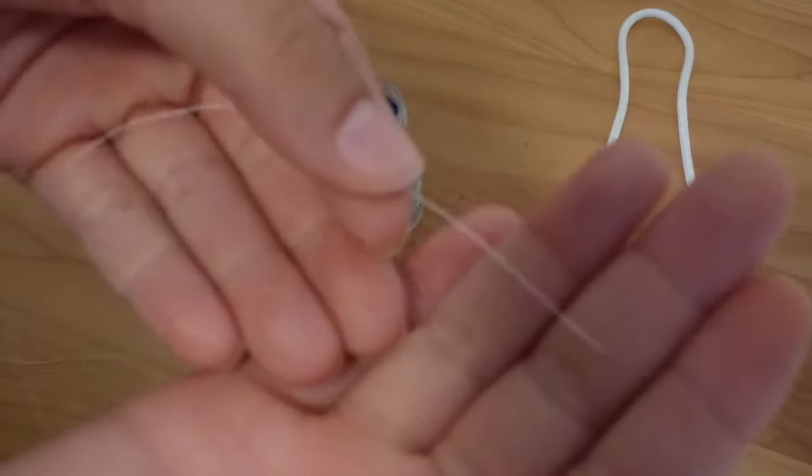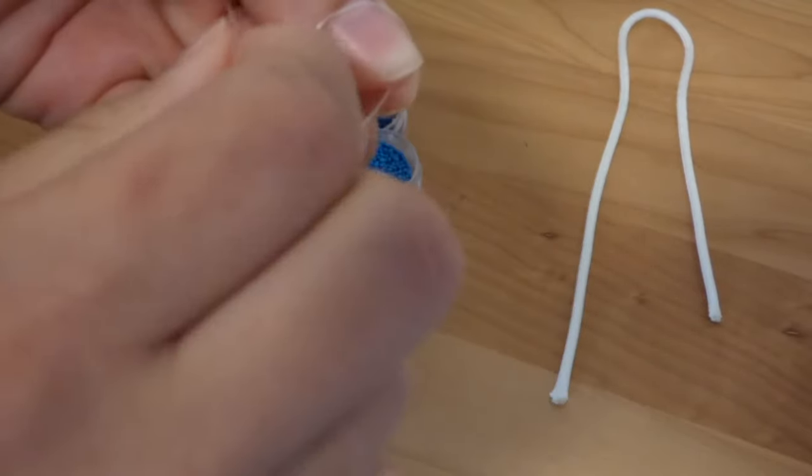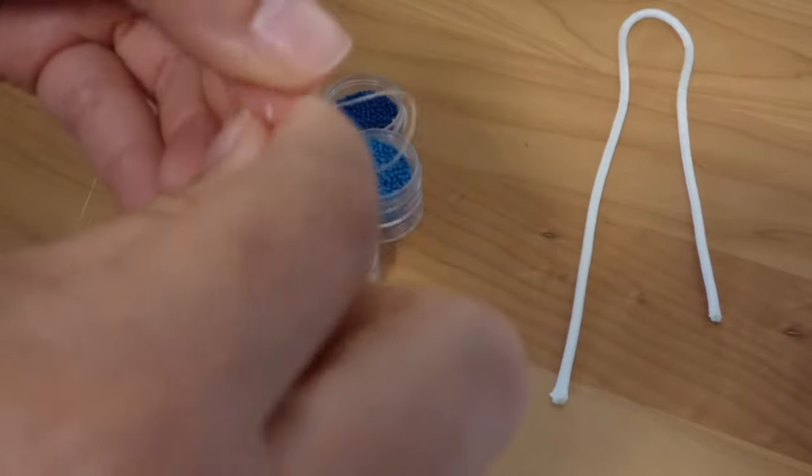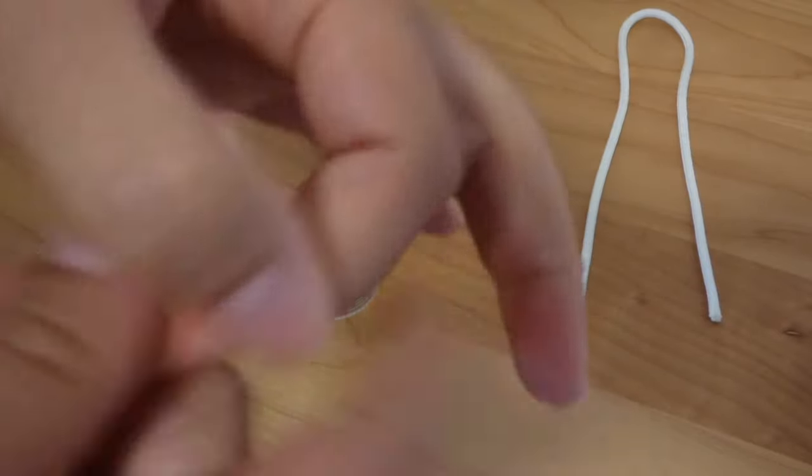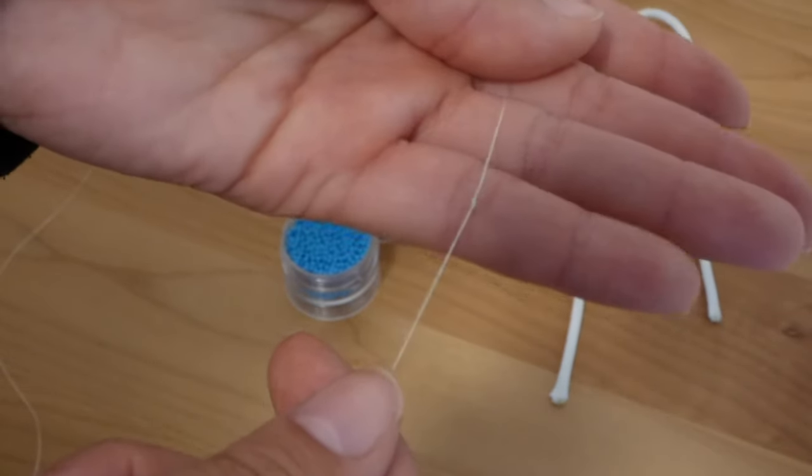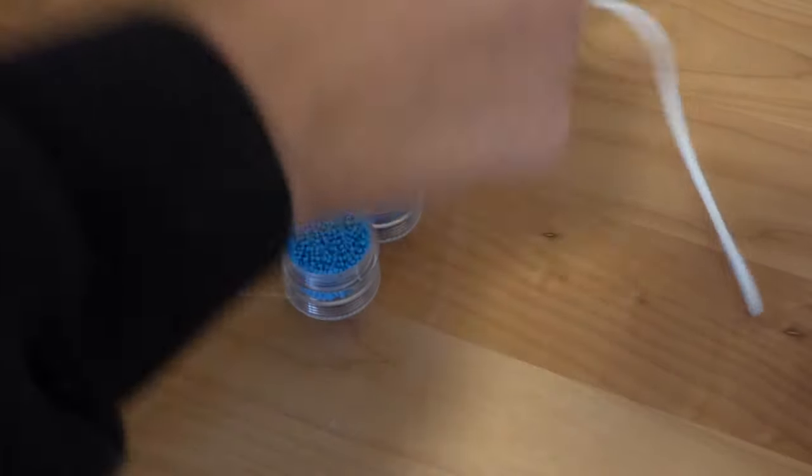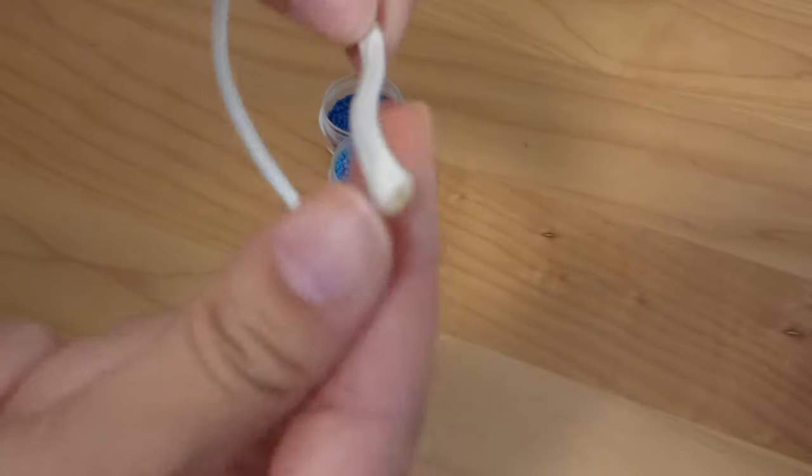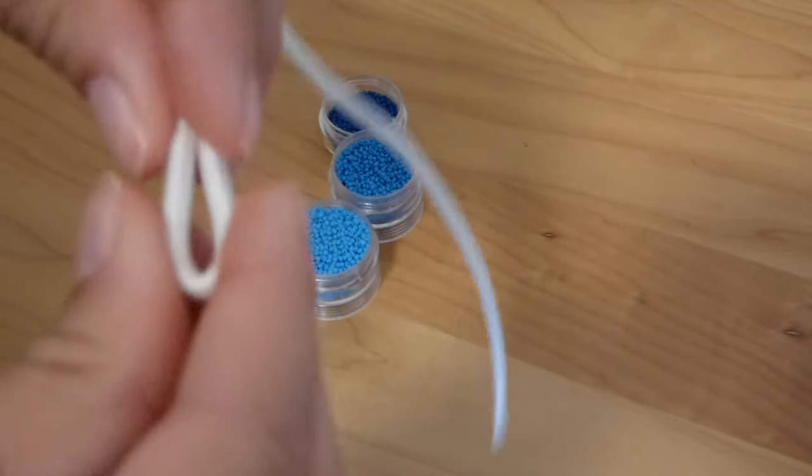So to get started, you're just going to take the end of your thread and you're going to tie three knots. You want the knot to definitely be thick enough so it doesn't go through the paracord when you stick it all the way through. So take your paracord and you're going to want to leave about a two-inch space in the front because you're obviously going to want to attach your key ring.